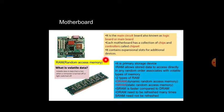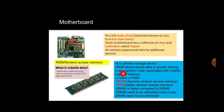RAM is random access memory and is the primary storage device. It allows stored data to be accessed directly in any random order. RAM is associated with volatile memory — volatile data is data that is lost when the computer is turned off. If you have not saved your data and the computer is switched off, the data will be lost, so always save your work when done.